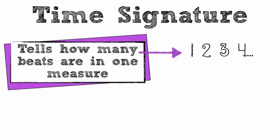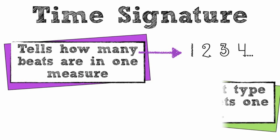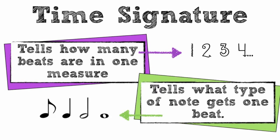A time signature tells us how many beats are in one measure of music. It also tells us what type of note gets one beat.